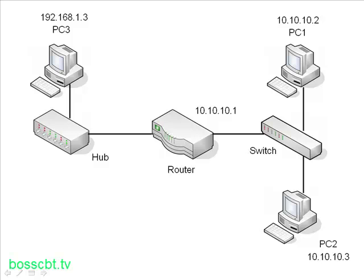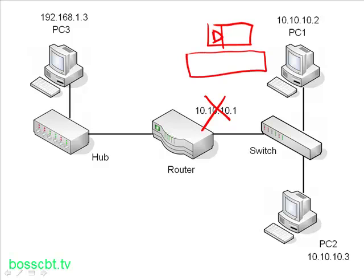As we discussed, PC1 will take a look at the destination IP address in the IP packet. PC1 asks itself: is that destination in my local subnet, or is it in a remote subnet? The answer here is that it's in the same IP subnet. So in this case, the router or default gateway is not needed — PC1 doesn't need it because it's already connected to the same network as PC2. PC1 is going to go ahead and take that IP packet and put it into an Ethernet frame.